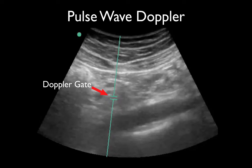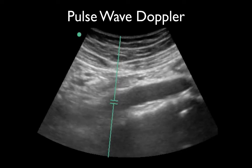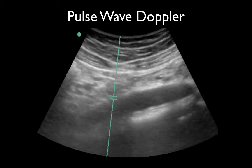Pulse wave Doppler relies on the Doppler effect. You're in your B mode ultrasound, you hit your power Doppler or pulse wave Doppler, and you get this line that shows up. You have what's called your Doppler gate, which is right here — that's your sample gate. What you're going to do is essentially tell the ultrasound machine that you do not care about anything else going on except what's in this little area. You're going to place that little area right over an area of interest.